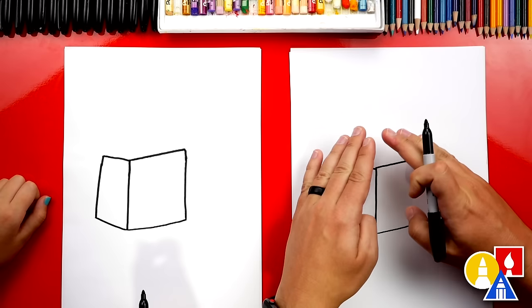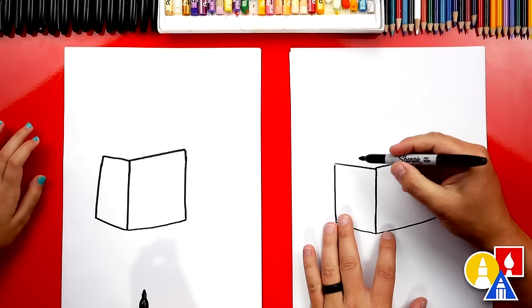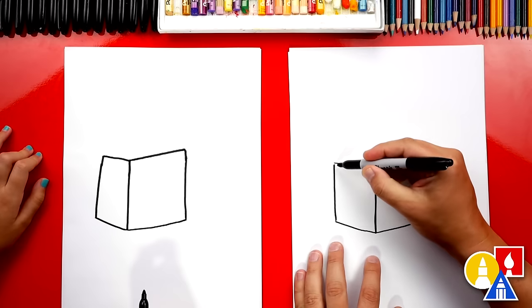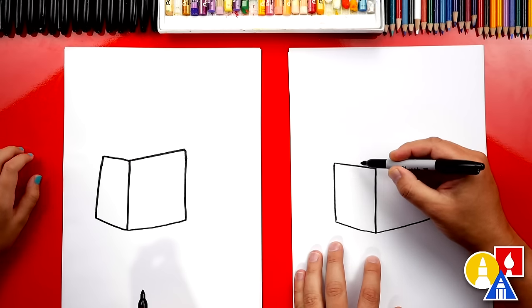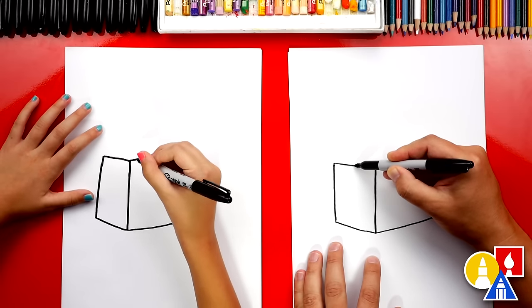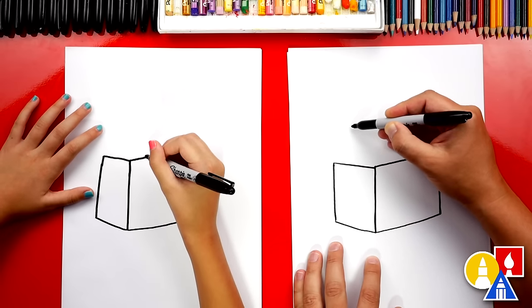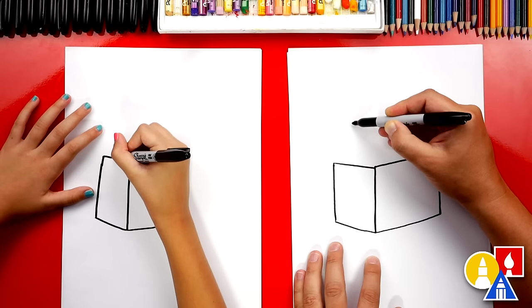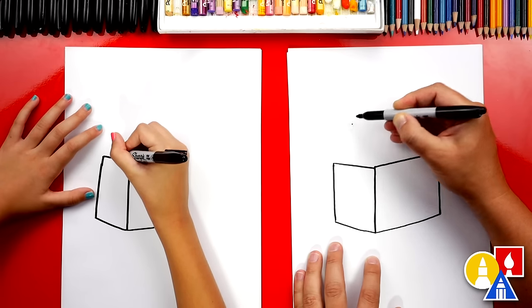Now we're gonna draw the top of our carton, our milk carton. We're gonna draw a triangle shape right here. But first, let's use our eyes again. And we're gonna measure the center. We're gonna split this line right in the middle. And then we're gonna draw an imaginary line up and then we're gonna add a point, like that.